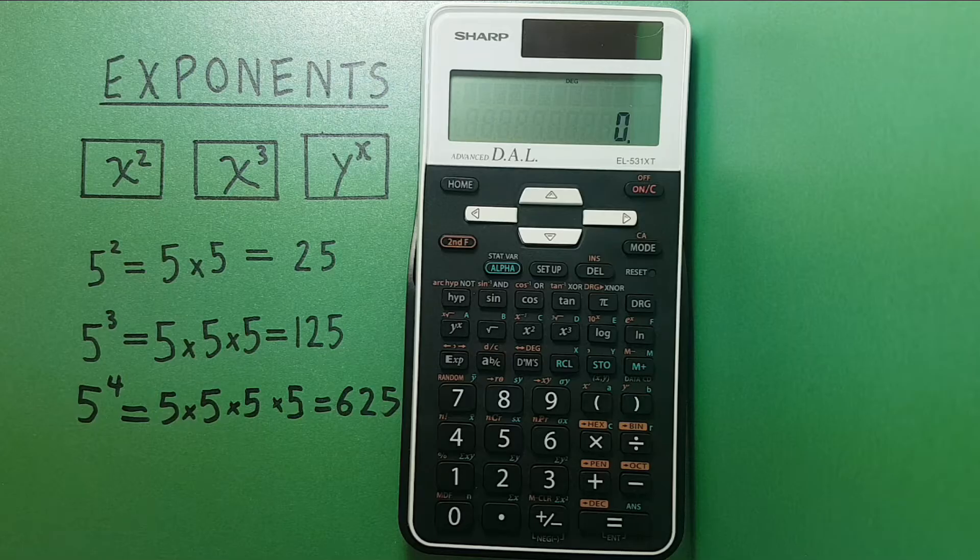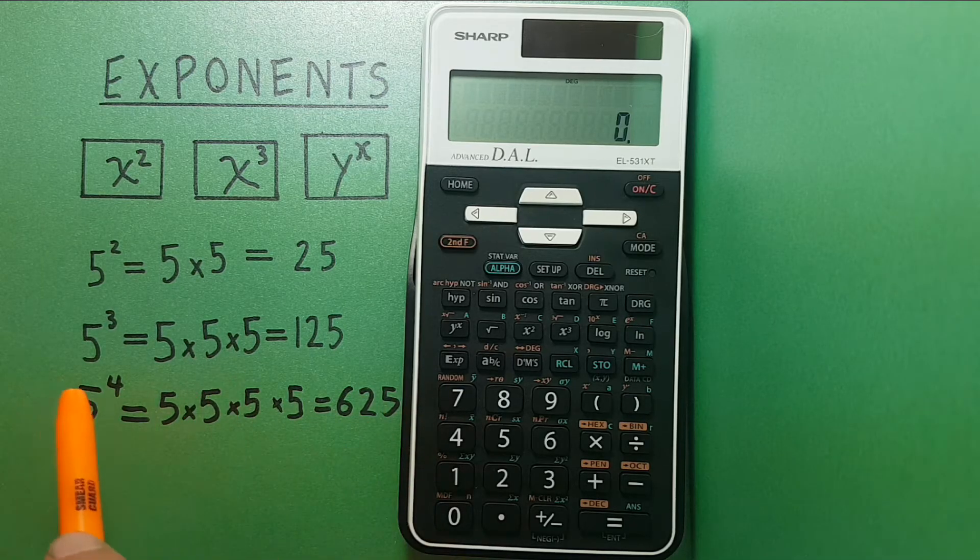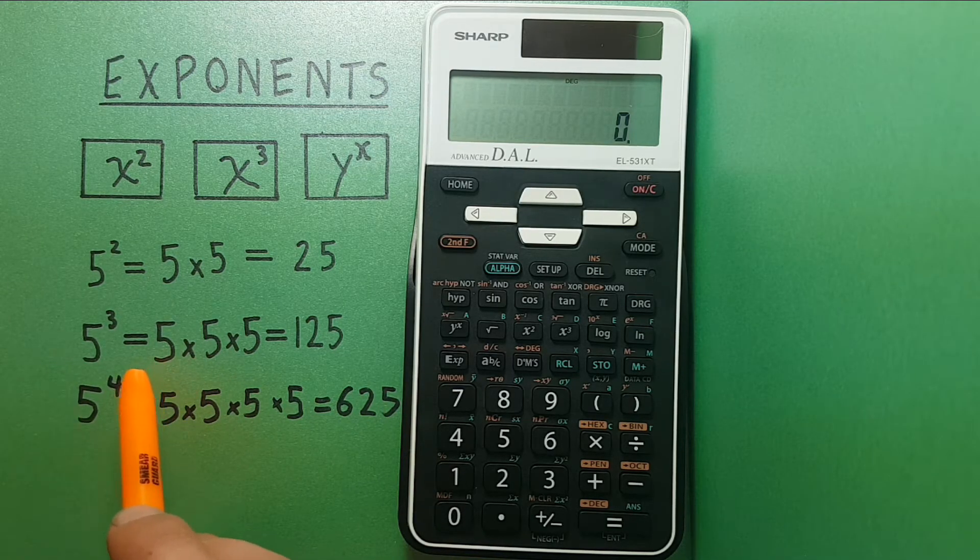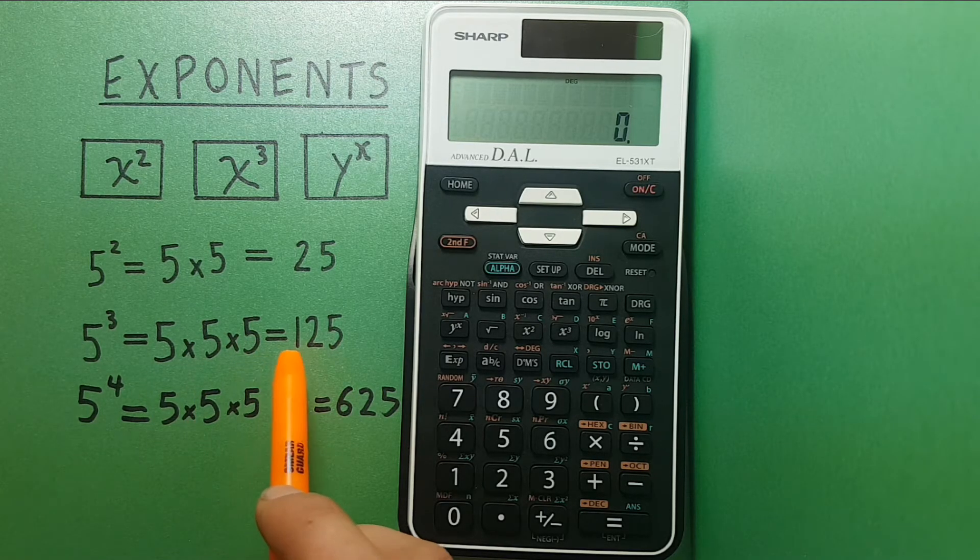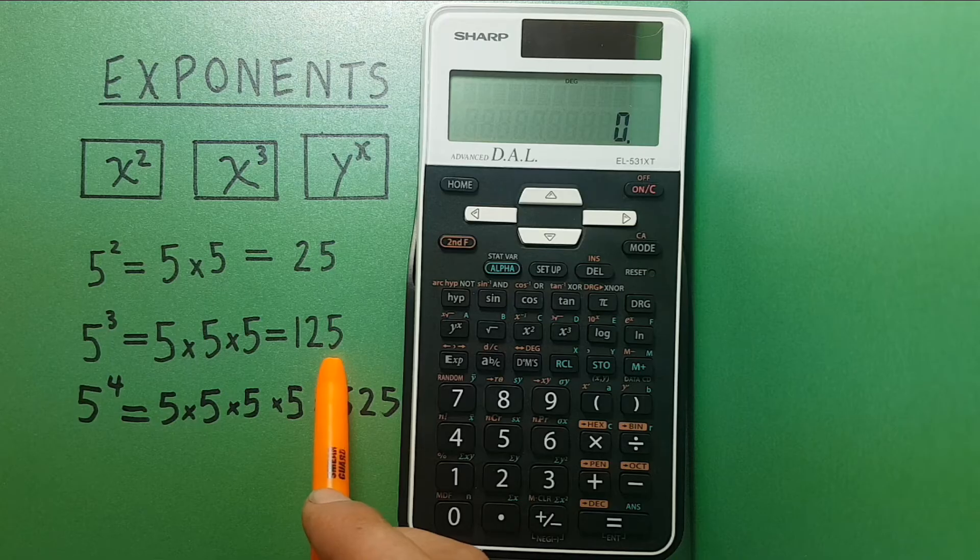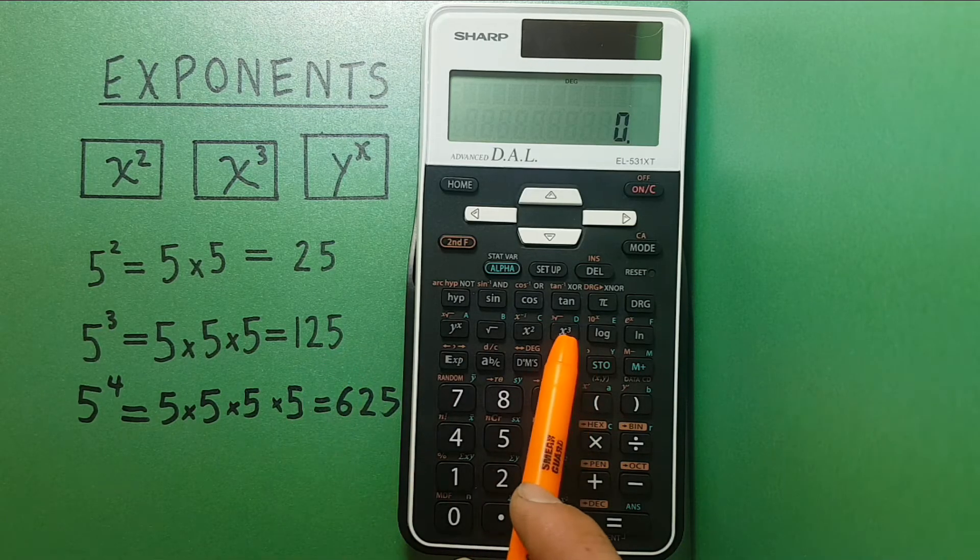If we wanted to cube a number, again which we know is, if we're using 5, 5 times 5 times 5, which should equal 125, we will be using this key, the X cubed button.